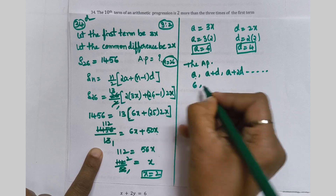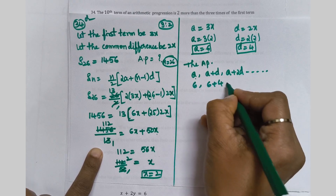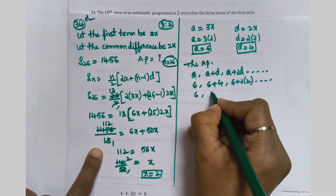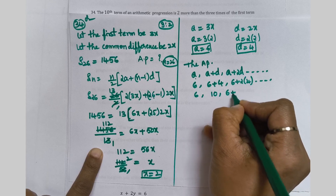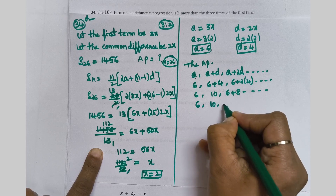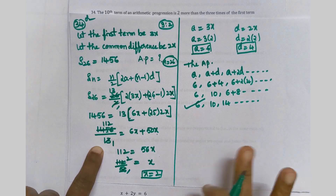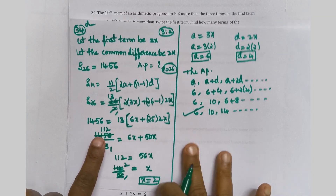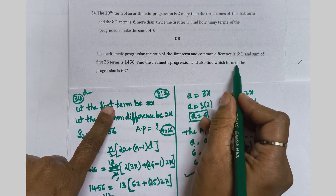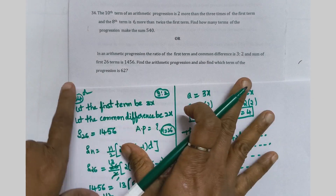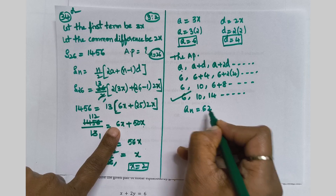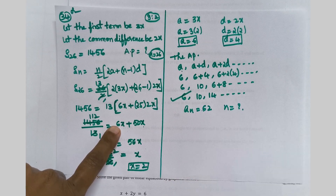So the AP is 6, 10, 14 — that is one answer. But the answer is not finished. Also find which term of the progression is 62. AN = 62 is given; which term means N is the question mark.